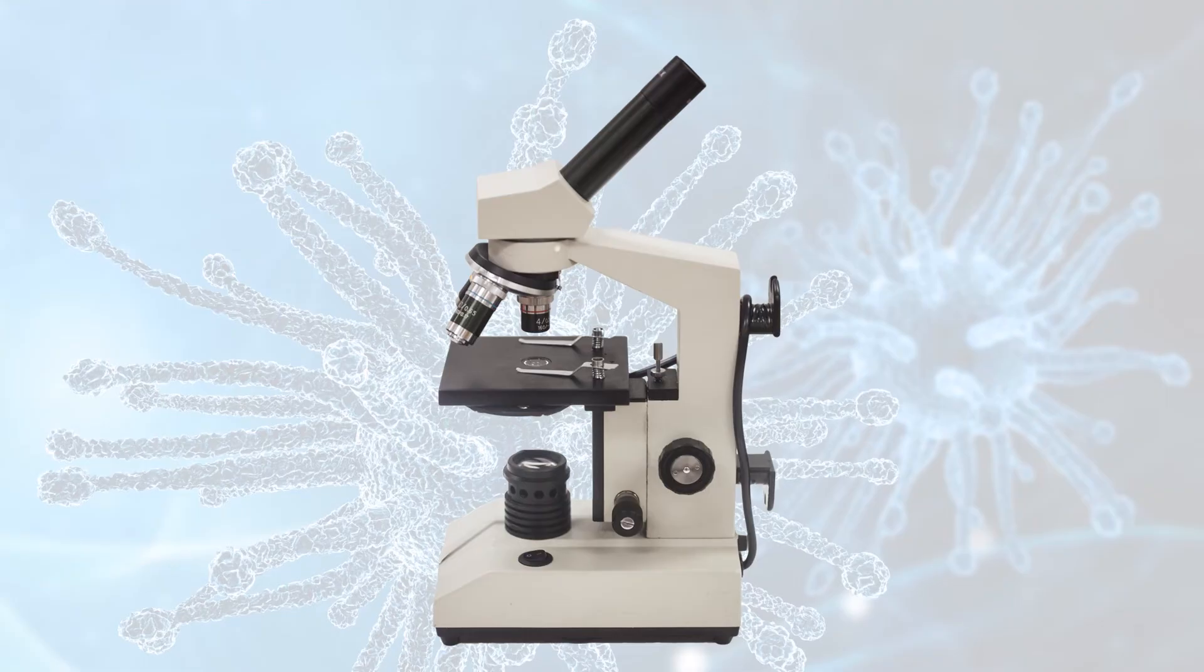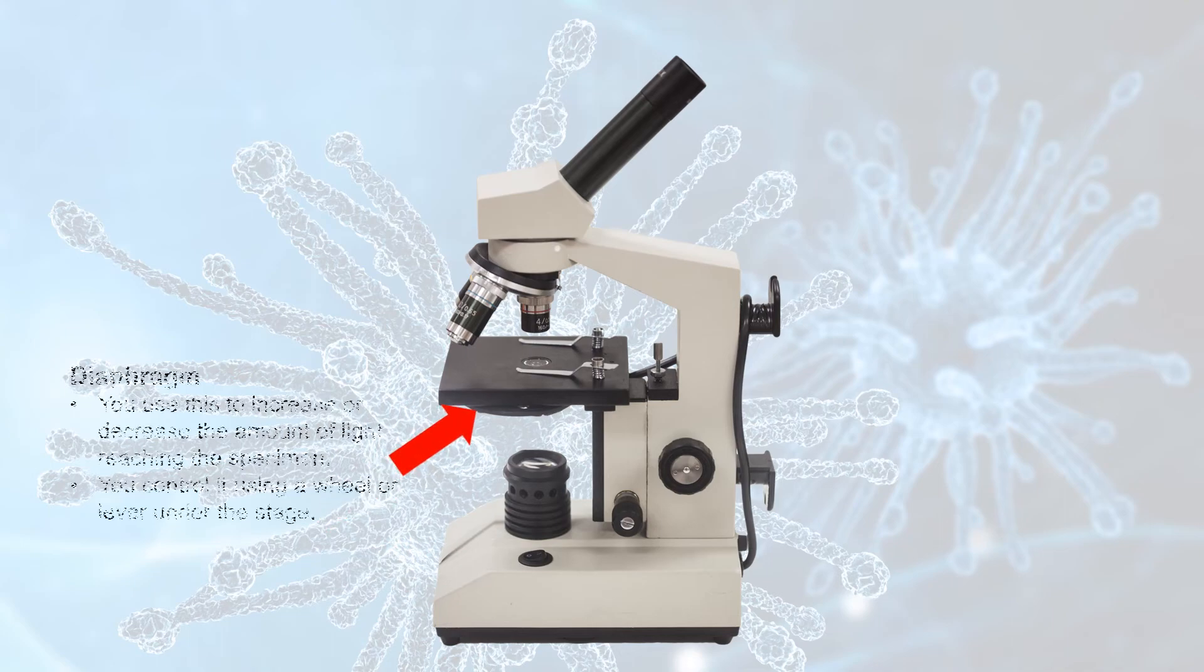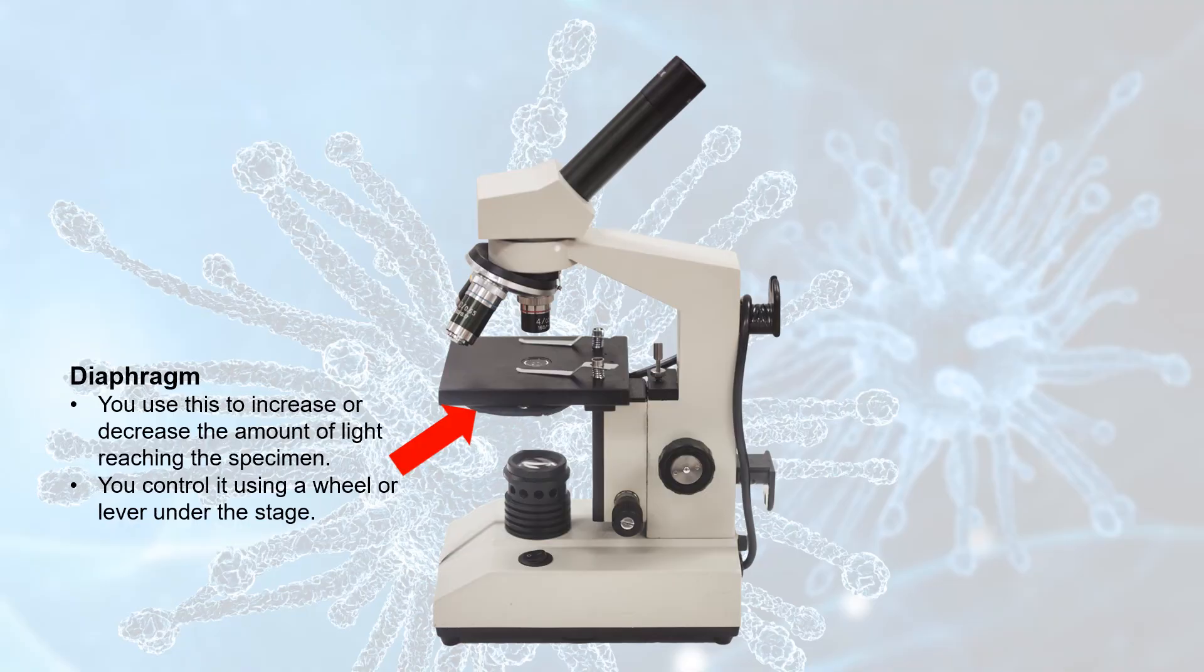Now, there are a couple of important parts of the microscope that you'll find under the stage. First off is the diaphragm. This part of the microscope controls how much light travels through the stage from the light source to the specimen, so that you can either increase or decrease the amount of light shining on the specimen. Usually, this is controlled by a wheel or lever under the stage.